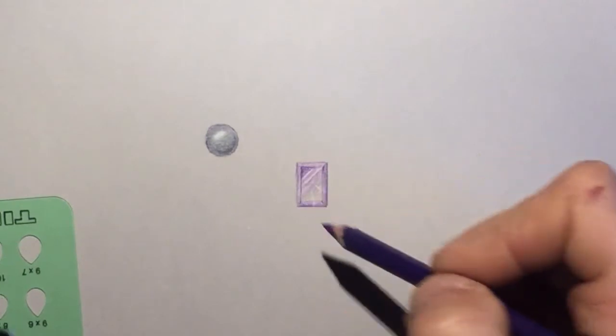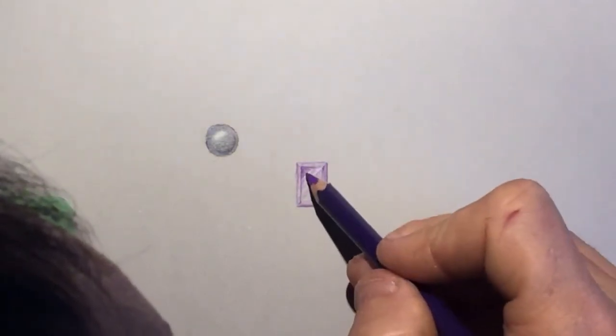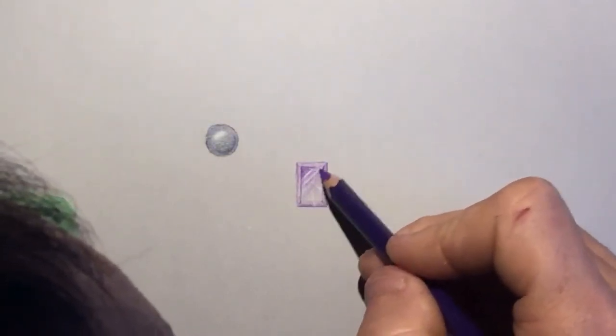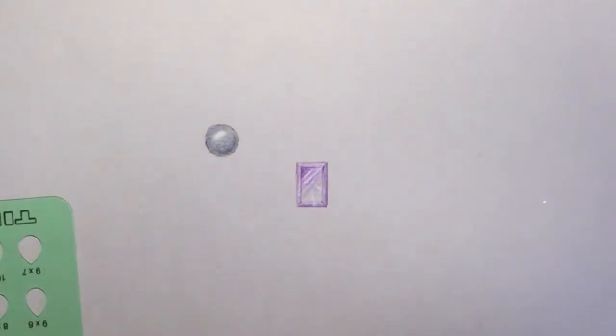And for most indicators, for most jewelry that we draw, this is enough to tell the client it's a purple amethyst in a setting.